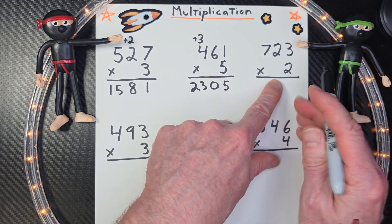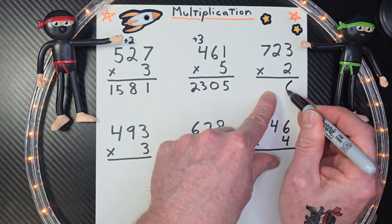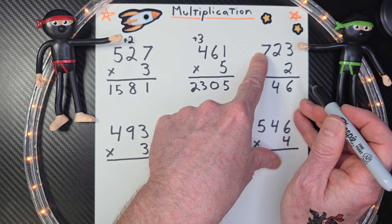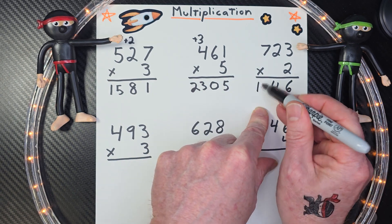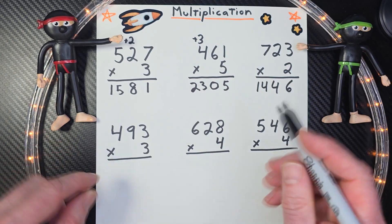All right, let's do the next problem here. 2 times 3, 6. 2 times 2, 4. 2 times 7, 14. How'd you guys do? Very good. Very good. All right.